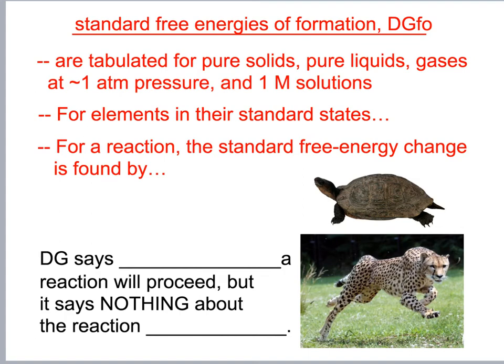Now let's talk about standard free energies of formation. Delta G naught at standard conditions — one molar, around one ATM. These values are tabulated for pure solids, liquids, and gases and are given to you at the end of the packet.